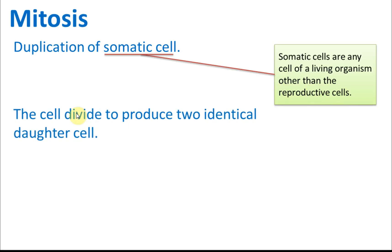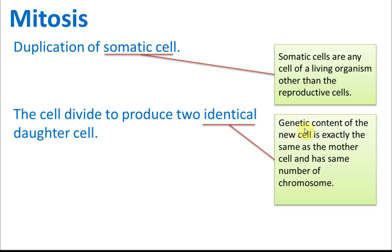The cell divides to produce two identical daughter cells. The genetic content of the new cell is exactly the same as the mother cell and has the same number of chromosomes.